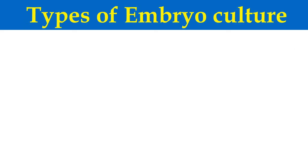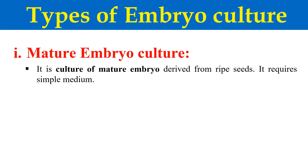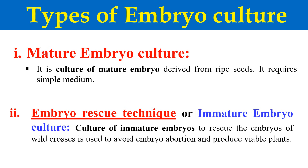Now the types of embryo culture. Generally there are two types. The first is mature embryo culture, in which we take the mature embryo from a ripened seed and culture it under in vitro conditions. This mature embryo generally requires a very simple medium.